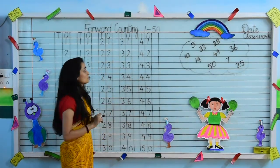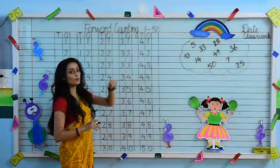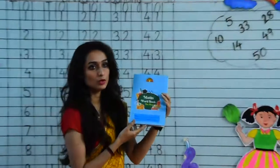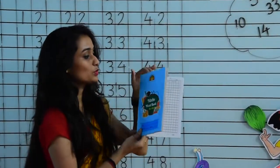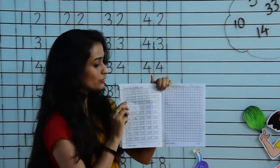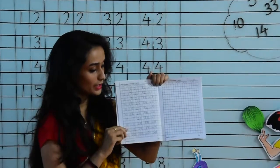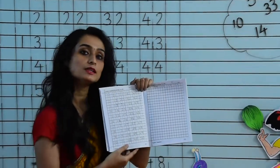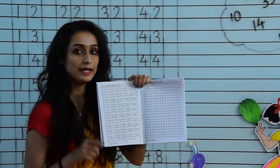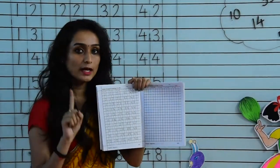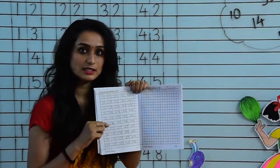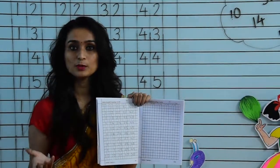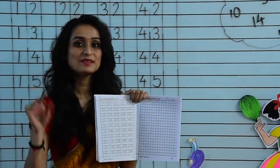So kids, this way you have to do your forward counting 1 to 50 in your maths workbook. Do this exercise on page number 26 and also on page number 27. Do it very neatly and very beautifully. Leave one block after writing each digit. Take care of yourself and your family. I hope you enjoyed today's video. Have a nice day. Bye.